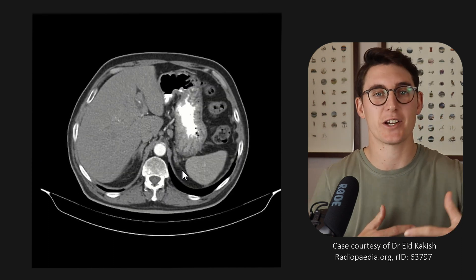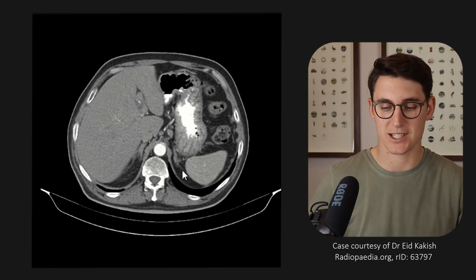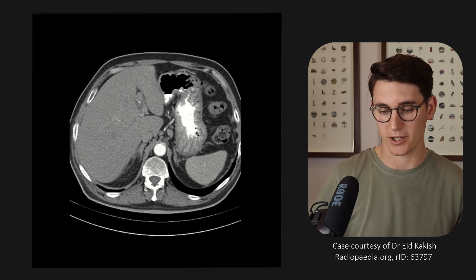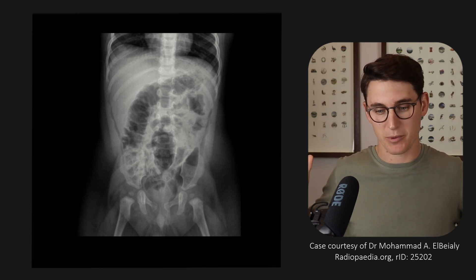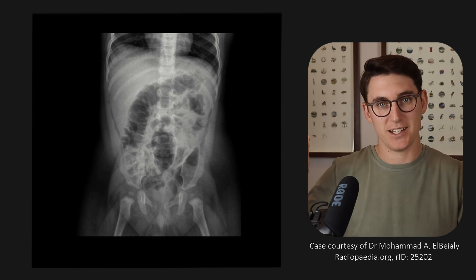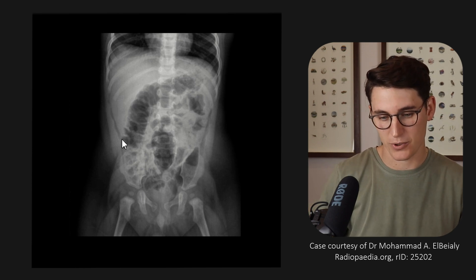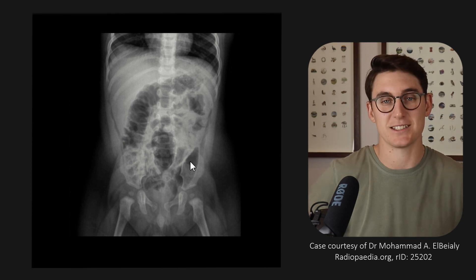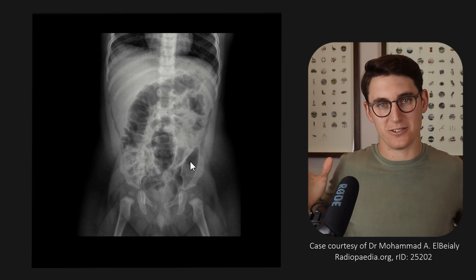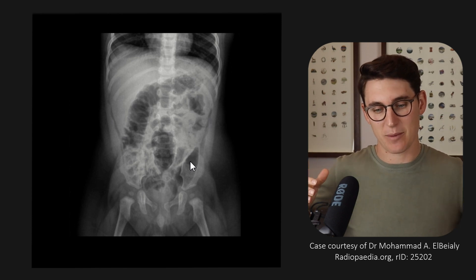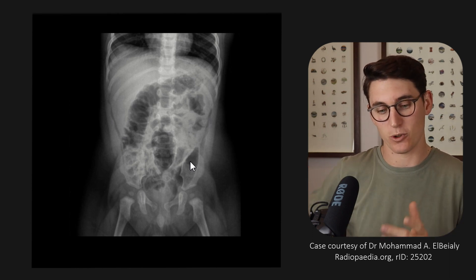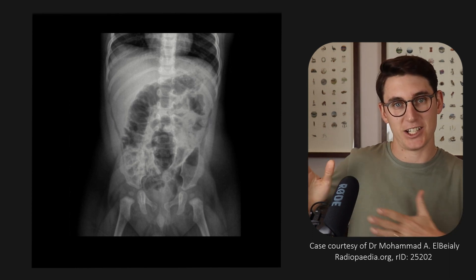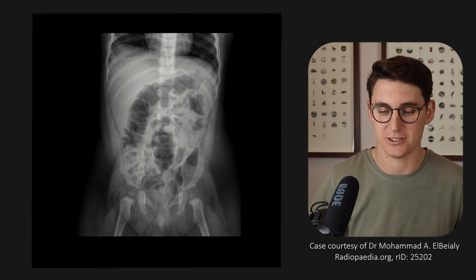So there we have it — we can split the retroperitoneum into three different segments. I also thought it would be interesting to show you an x-ray. As we see that posterior pararenal space coming round with fat in that space, we can see on an x-ray a preperitoneal fat stripe coming along here. We can sometimes think this is air within the abdomen, but that's just the retroperitoneal fat coming around the sides of the abdomen, with the posterior border being our transversalis fascia and the anterior border by this point being our peritoneum — so it's on the outside of our peritoneal cavity.